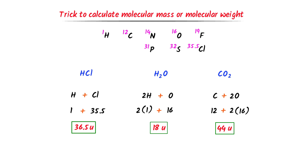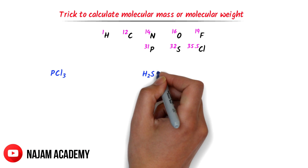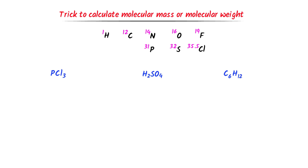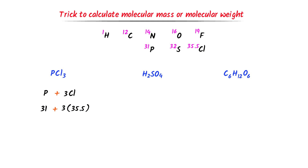Note down the molecular masses of these molecules. Now let me teach you some more difficult examples. Consider these molecules and find their respective molecular masses. We can see that there is one atom of phosphorus and three atoms of chlorine. The atomic mass of phosphorus is 31 and the atomic mass of chlorine is 35.5. So I write 31 + 3×35.5, which equals 137.5 units. The molecular mass of PCl3 is 137.5 units.